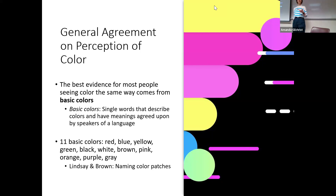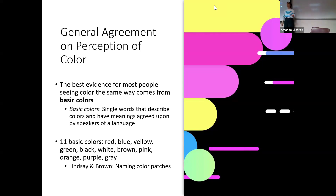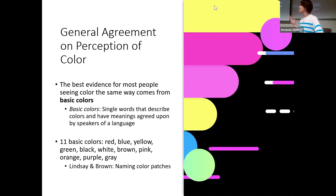The 11 basic colors are: red, blue, yellow, green, black, white, brown, pink, orange, purple, and gray. This comes largely from work by Lindsay and Brown, where people named different color patches. One thing you'll notice about these focal color names is that they're short — most are one syllable. Purple, yellow, and orange have two, but by and large, focal colors tend to have very short names.